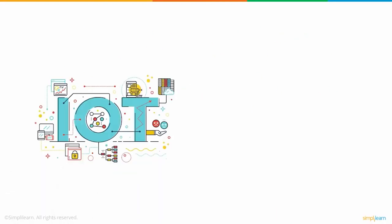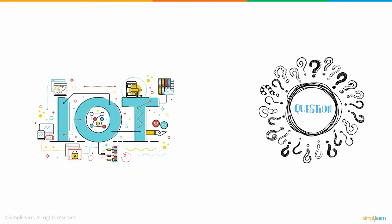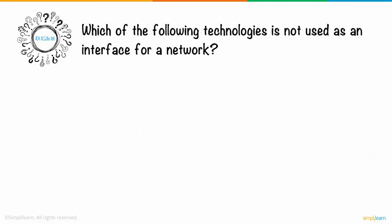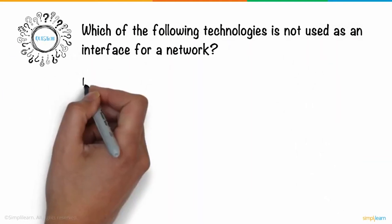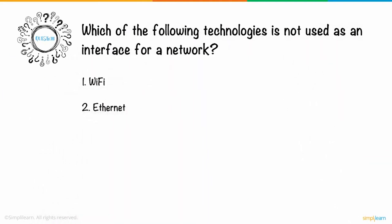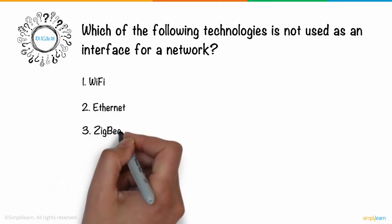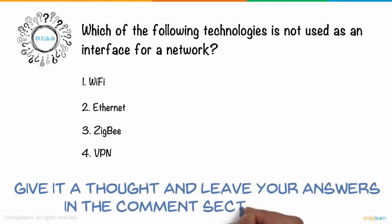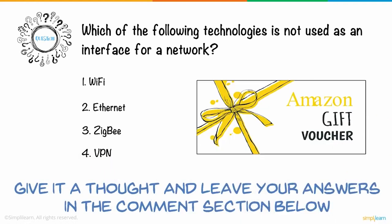Now that you have a picture of what IoT is, here's a simple question for you. Which of the following technologies is not used as an interface for a network? One: Wi-Fi. Two: Ethernet. Three: Zigbee. Four: VPN. Give it a thought and leave your answers in the comment section below. Three lucky winners will receive Amazon gift vouchers.